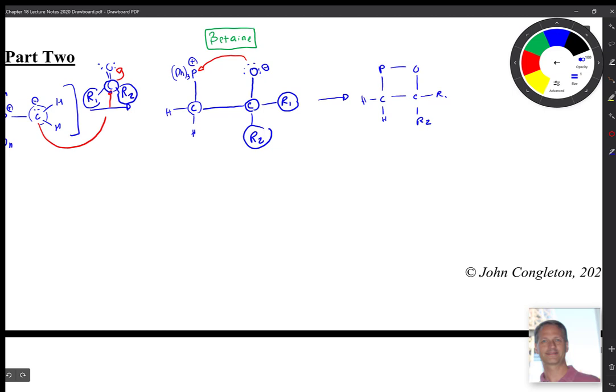phosphorus, oxygen. Here you have your Ph3 and your lone pair on there. This thing is called an oxaphosphetane.